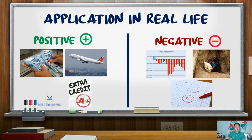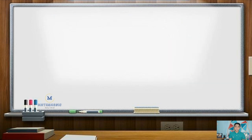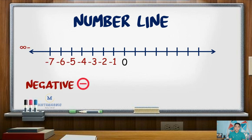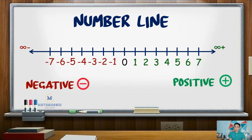In the number line, all negative numbers are found on the left side of zero and positive numbers on the right side of zero.